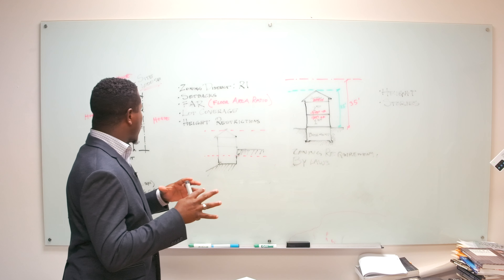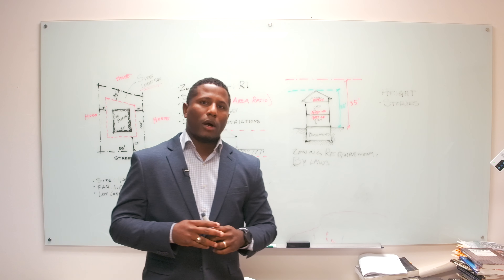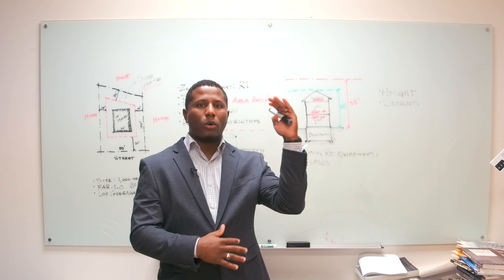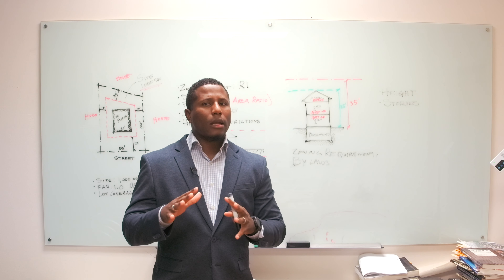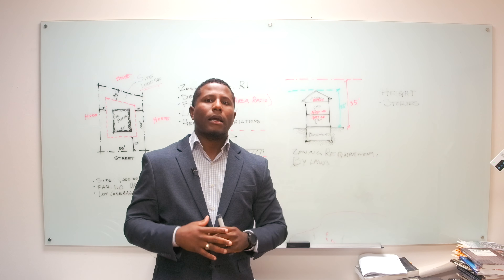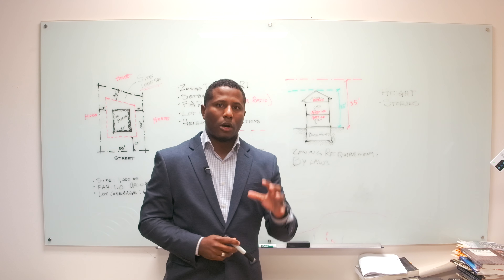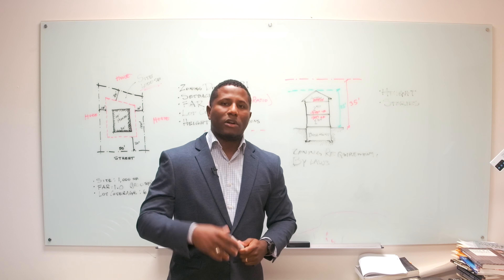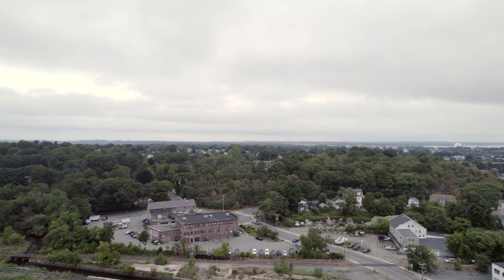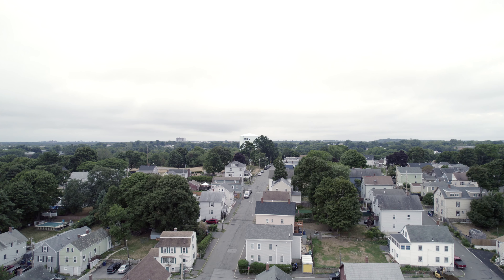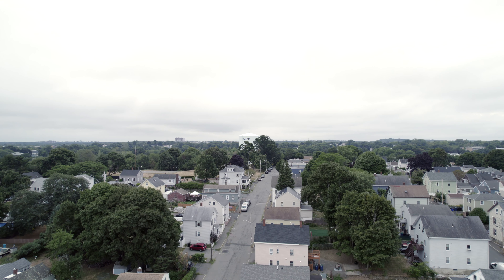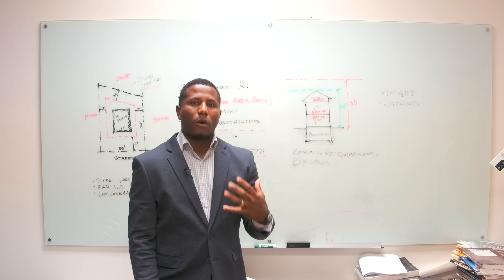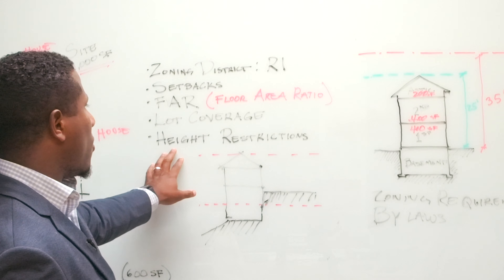So let's jump into the height restrictions. Something we always get questions about when we meet clients is: how high can I go within my district? We always like to express to clients that you need to go into the zoning requirements and see which district you are located in. For example, if you are in an area in Lynn, Massachusetts, in R1 or Residential District 1, it might be different than if you are in a commercial district like C1 or B1. The scale of buildings differs based on the district you're in, so it's very important that you always refer to your zoning district to find information about height restrictions.